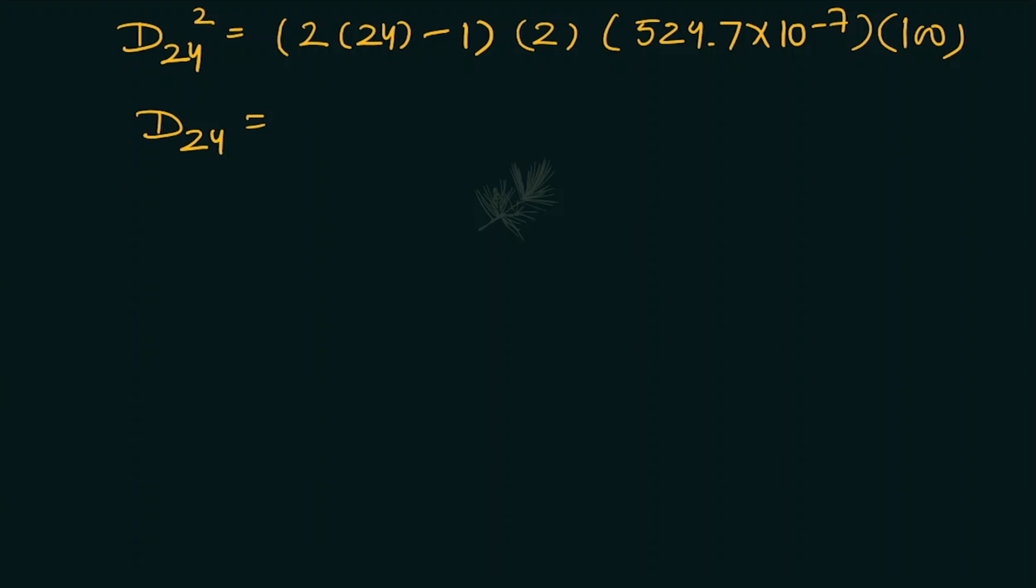So our diameter comes out to be, after solving this whole equation, we get the diameter of 24th ring as 0.702 centimeter. You can check this answer.